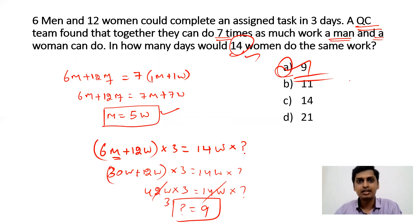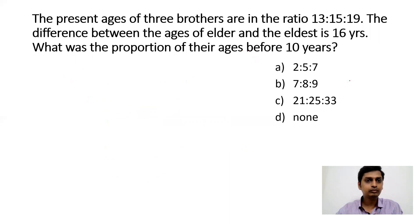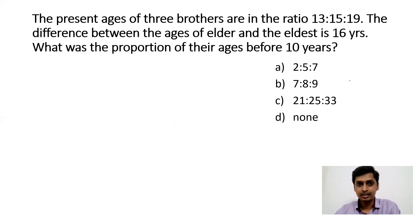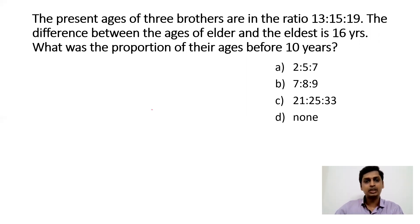This question is based on time and work. Now the next question: the present ages of 3 brothers are in the ratio 13:15:19. The difference between the ages of the elder and eldest is 16 years. What was the proportion of their ages before 10 years?